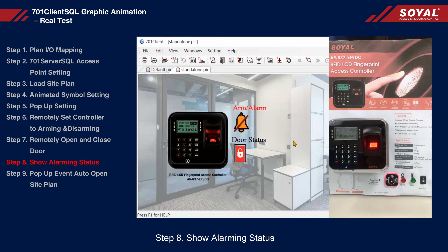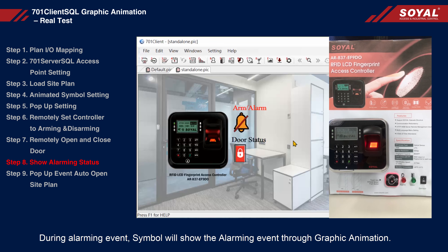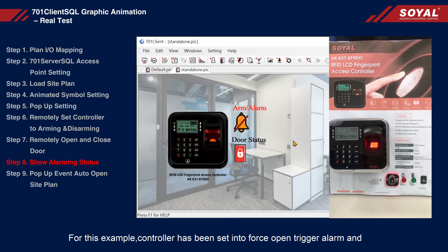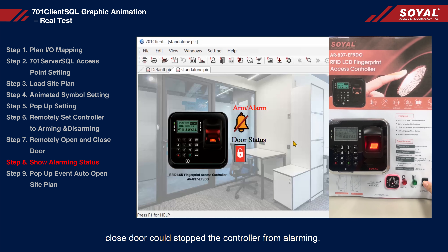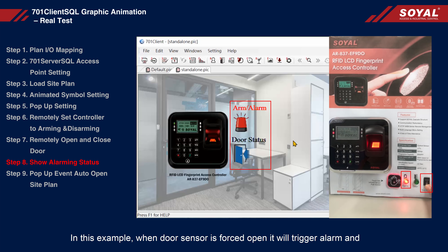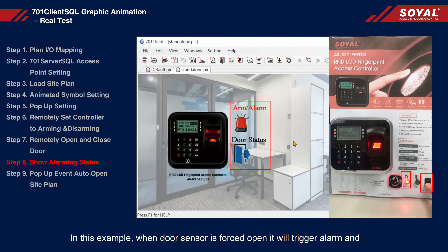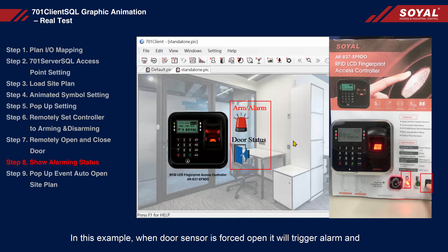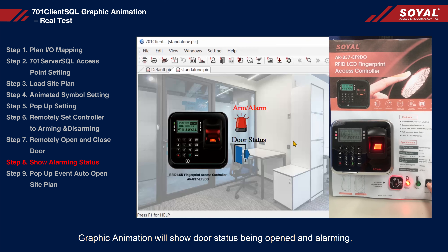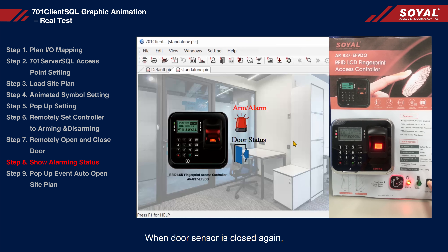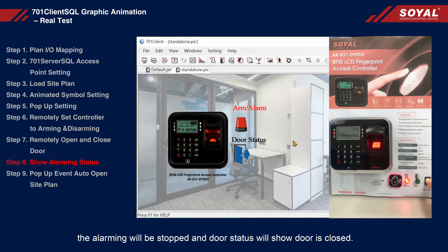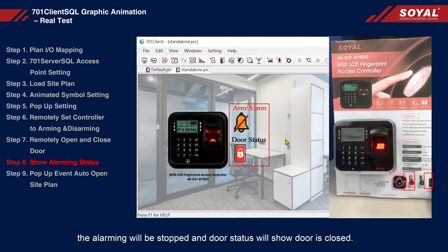Step 8: Show alarming status. During an alarming event, the symbol will show the alarming event through graphic animation. For this example, the controller has been set to trigger alarm on force open, and closing the door could stop the controller from alarming. When the door sensor is force-opened, it will trigger the alarm and the graphic animation will show door status as open and alarming. When the door is closed again, the alarming will stop and door status will show the door is closed.